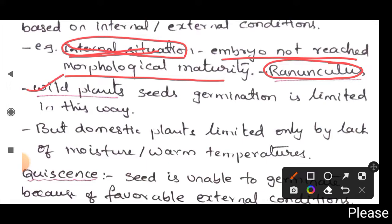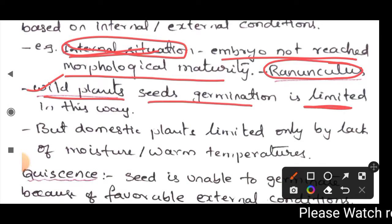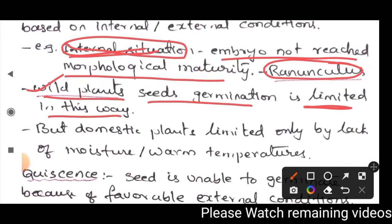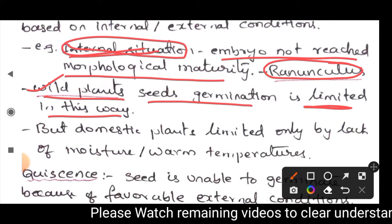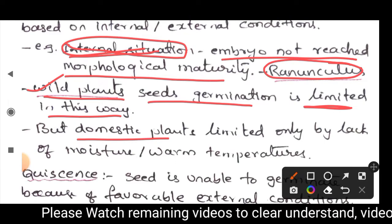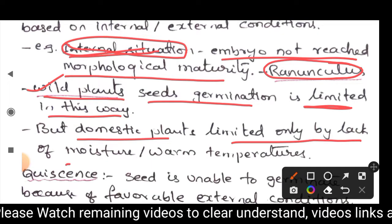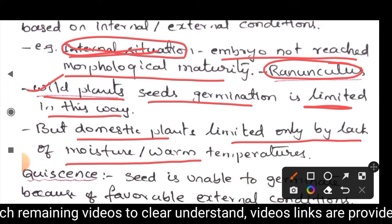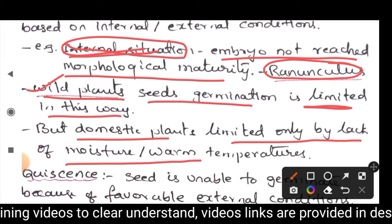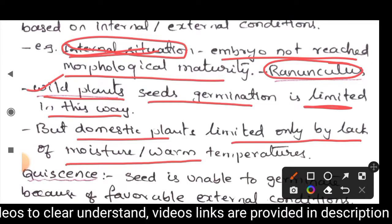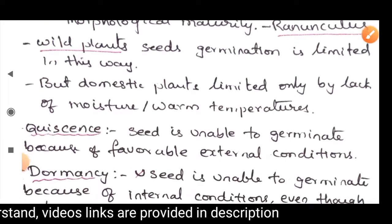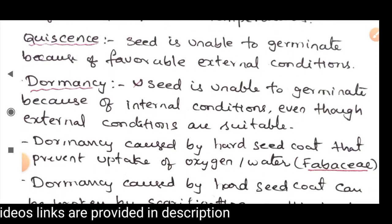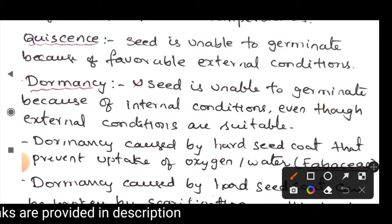In terms of internal situations for seed germination, for example in Ranunculus, germination is inhibited. In some domestic plants, seed germination is limited only by lack of moisture and warm temperatures — these are external factors.